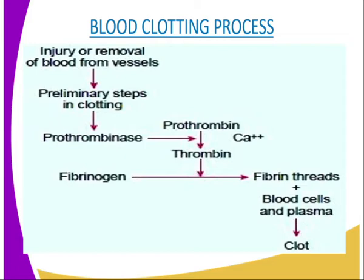Thromboplastin is also released by the damaged tissues. This enzyme thromboplastin is used to neutralize epirin, whereby the function of epirin is as an anti-clotting factor, and it is used to activate conversion of prothrombin to thrombin. This process requires calcium ions, as you can see from our diagram, we also have the calcium ions shown.